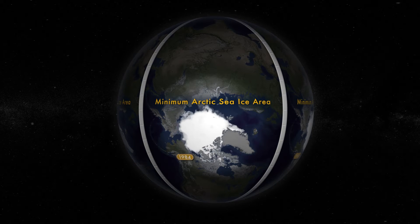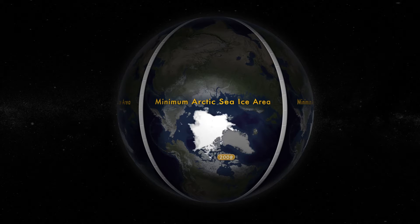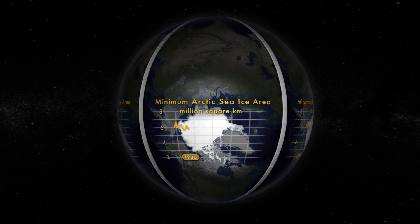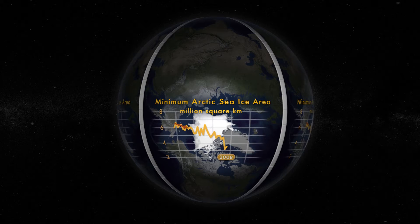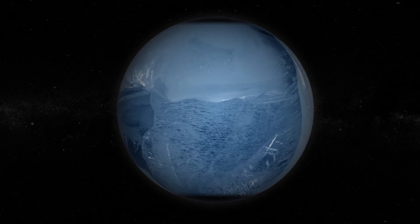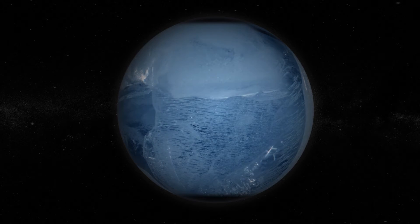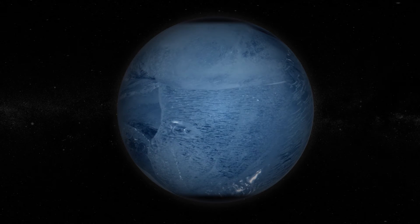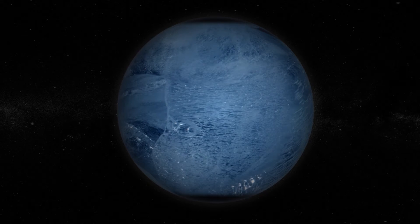More than a quarter century of satellite data reveal a substantial decrease in sea ice at the North Pole. Less ice means the Earth has a smaller reflective surface to bounce sunlight back into space. Less ice also means there's more exposed dark water to soak up the warming rays of the sun. The Earth warms, leading to faster melting and additional ice loss. This feedback loop means the poles amplify temperature changes around the world.